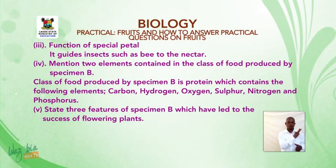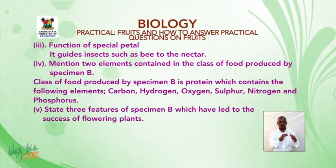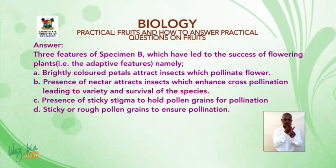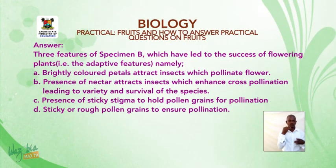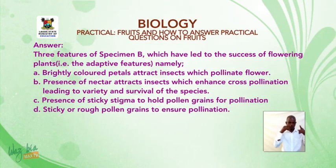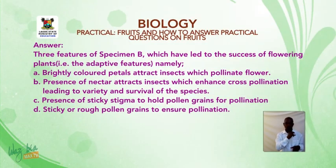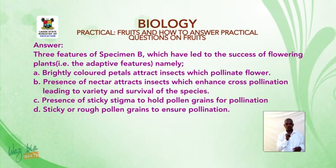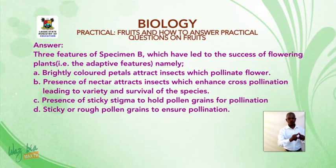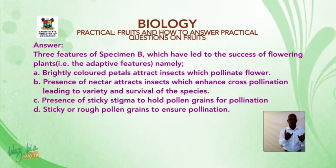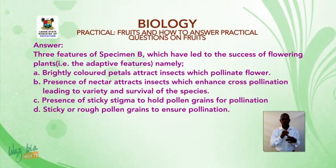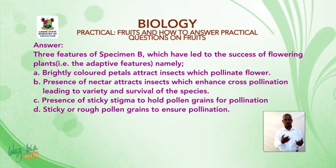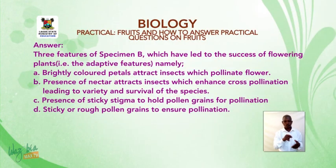Question: State three features of specimen B which have led to the success of flowering plants. Answer: Three features of specimen B (flamboyant flower) are: brightly colored petals attract insects which pollinate the flower; presence of nectar attracts insects leading to cross-pollination, variety, and survival of the species; presence of sticky stigma to hold pollen grains, and sticky or rough pollen grains to ensure pollination.